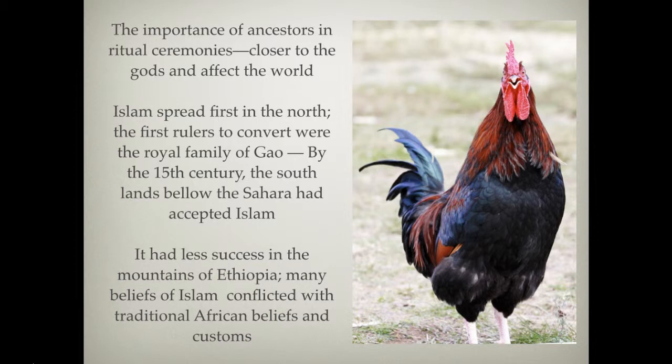Many of these divining elements are connected to what we might call voodoo. A common ritual would be the use of a chicken and the blood of a chicken for some kind of spell. These are common practices. Ultimately, we see the rise of Islam making deep incursions into Northern Africa and pushing south through trade.